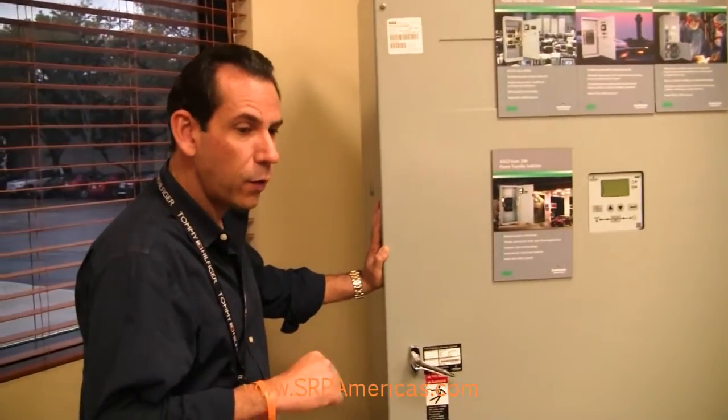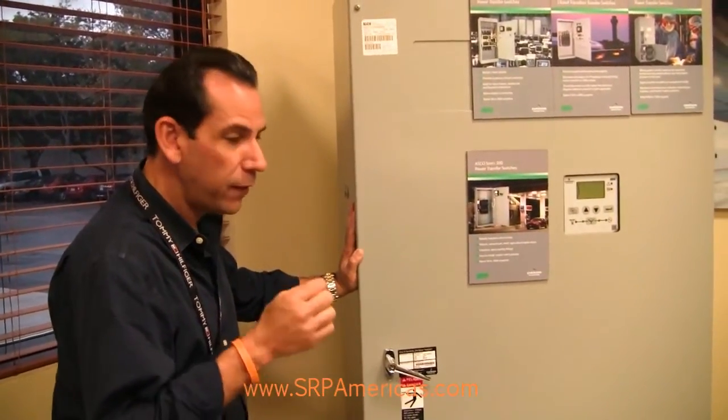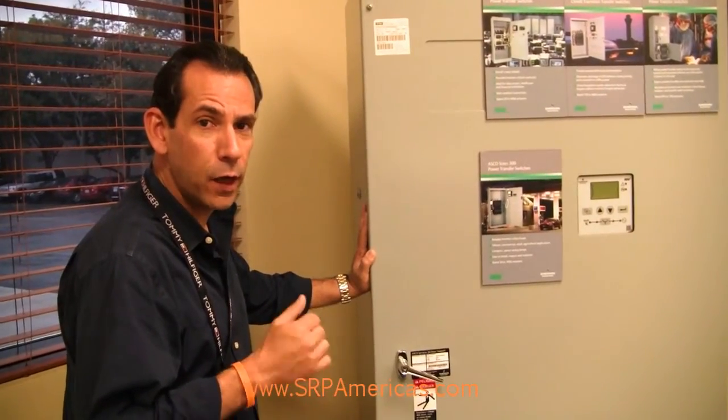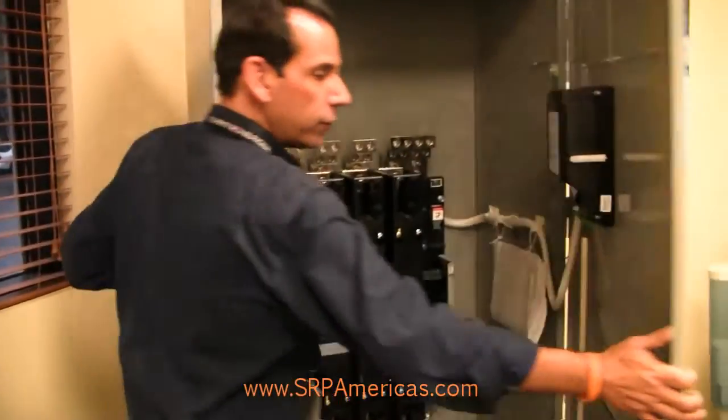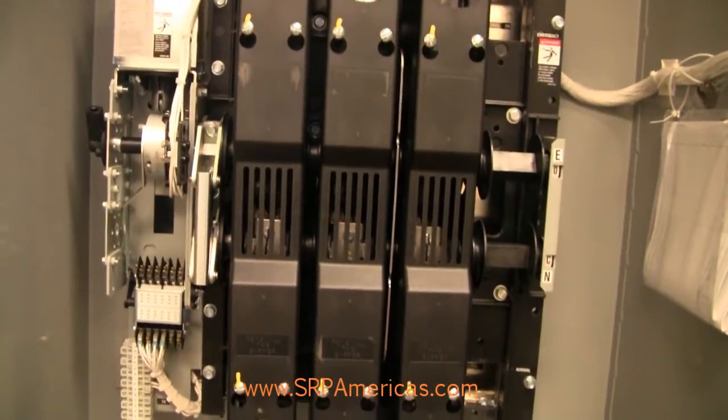What we're going to show today is where the customer would hook up the remote start signal to the transfer switch. By opening the transfer switch, the first thing we want to do is find the TB strip.